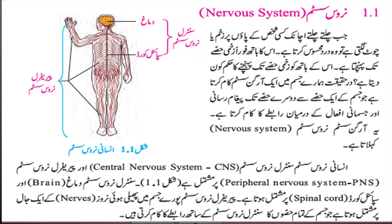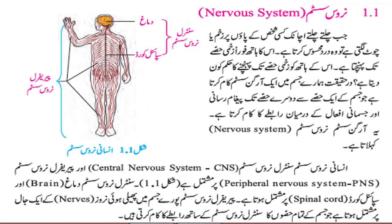آئیے ٹیکسٹ بک سے مطالعہ کرتے ہیں۔ جب کسی شخص کے پاؤں پر زخم یا چوٹ لگتی ہے تو وہ درد محسوس کرتا ہے اور اس کا پورا جسم چونک جاتا ہے۔ اس کا ہاتھ فوراً زخمی حصے تک پہنچتا ہے۔ اس کے دماغ کو پاؤں کے زخمی ہونے کے بارے میں کون بتاتا ہے؟ اس کے ہاتھ کو زخمی حصے تک پہنچنے کا حکم کون دیتا ہے؟ در حقیقت ہمارے جسم میں ایک organ system کام کرتا ہے جو جسم کے ایک حصے سے دوسرے حصے تک پیغام رسانی کا کام کرتا ہے۔ یہ organ system nervous system کہلاتا ہے۔